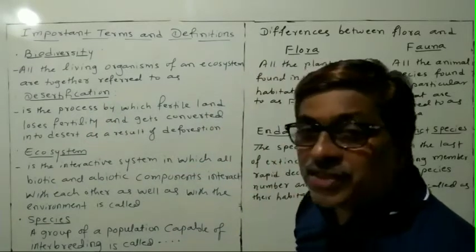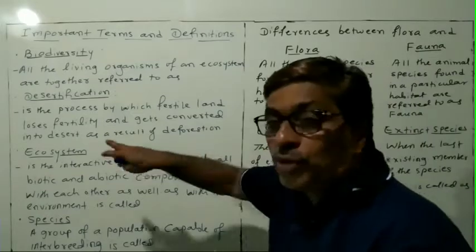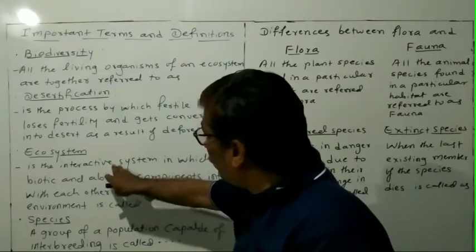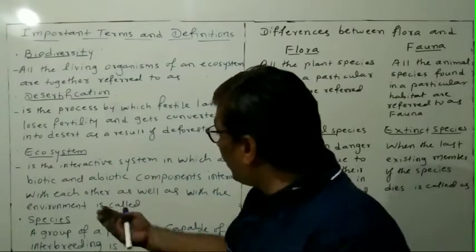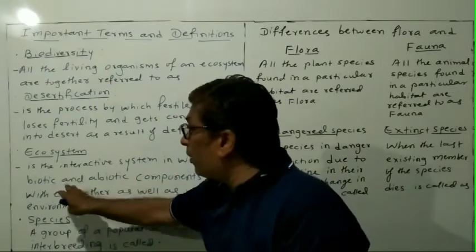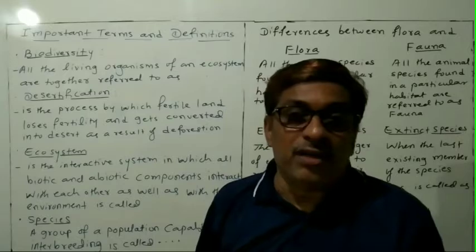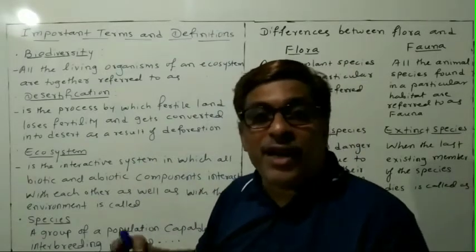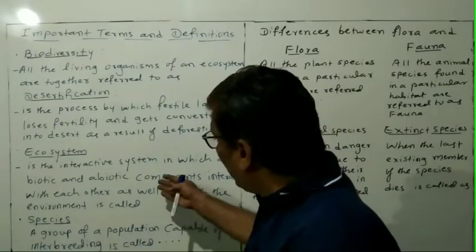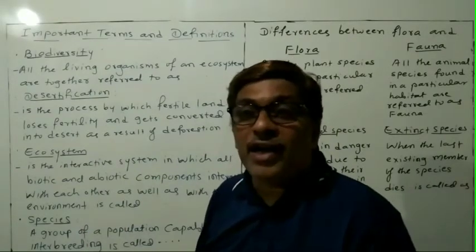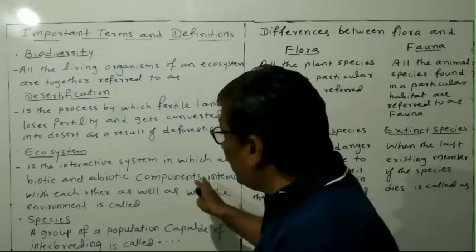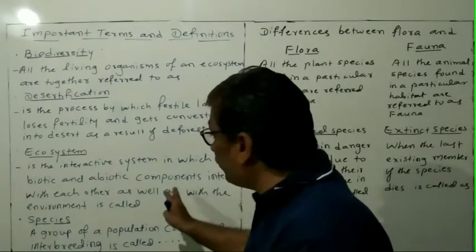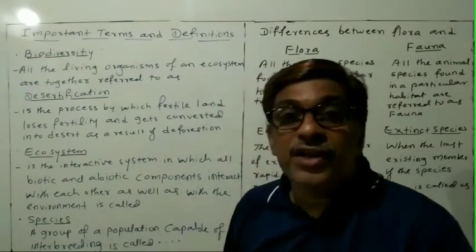Next one is ecosystem. What do you mean by ecosystem? Ecosystem is an interactive system in which all the biotic and abiotic components interact. Biotic means living things — living plants, animals, microorganisms — and abiotic means non-living things like air, light, temperature, water. These interact with and depend on each other. That is called an ecosystem.